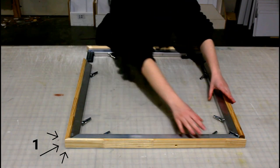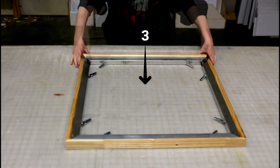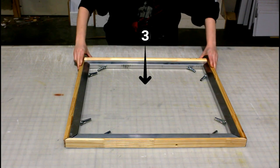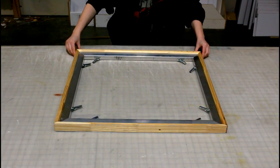It is important to attach the two side stretcher bars to the top stretcher bar first, and then slide the bottom stretcher bar into the side stretcher bars to complete the frame. This is the easiest order to connect the pieces.